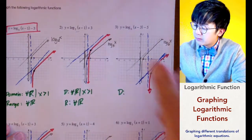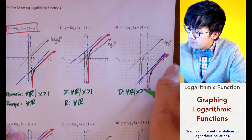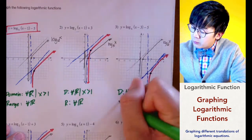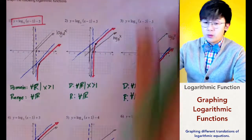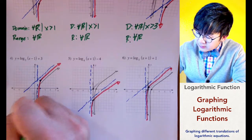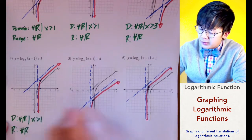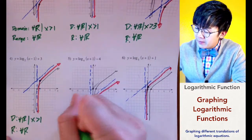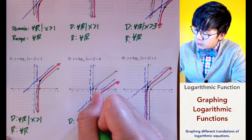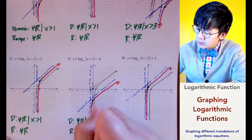For the third graph, the vertical asymptote starts at 3, so the domain is all real numbers such that x is greater than 3, and the range is all real numbers. For the other graphs, the domain starts at x greater than 1, and the range is all real numbers, as it continually goes up to positive infinity. For the fifth function, the vertical asymptote is at negative 1, so the domain is all real numbers such that x is greater than negative 1, and the range is all real numbers.